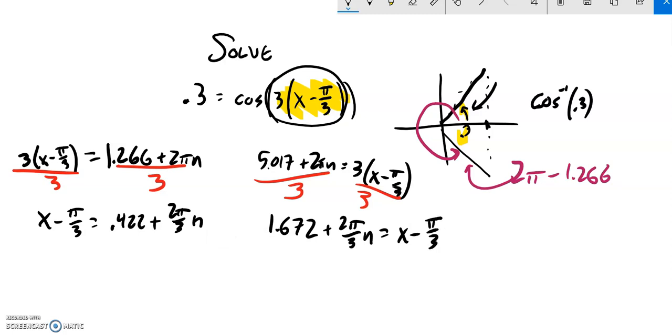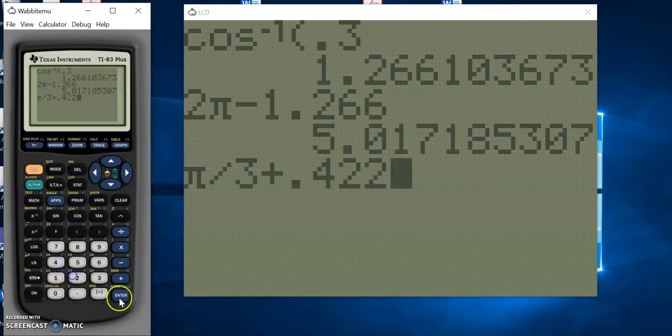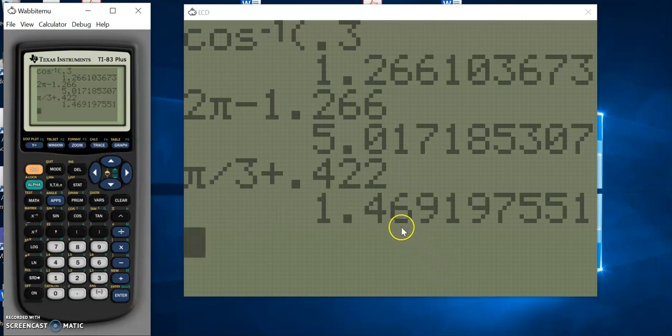Now I need to add π/3 to both sides. Notice I'm just combining like terms, so this plus this or this plus this. The period shouldn't be affected by this; this is in terms of n. So I'm going to add π/3 to both sides. On my calculator, that would be π/3 plus 0.422, which gives 1.469.